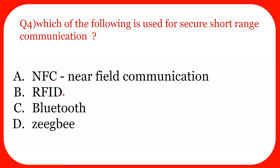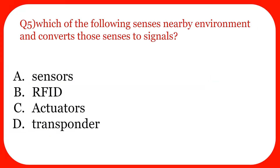Question four: Which of the following is used for secure short range communication? The options are NFC (near field communication), RFID, Bluetooth, and ZigBee. The right answer is NFC. NFC has a range of four centimeters. If you want communication between objects within four centimeters, NFC is the best option. Since the range is restricted, there is less chance of signal interference — the smaller area means interference of signals is neglected. That is why it is called secure short range communication.